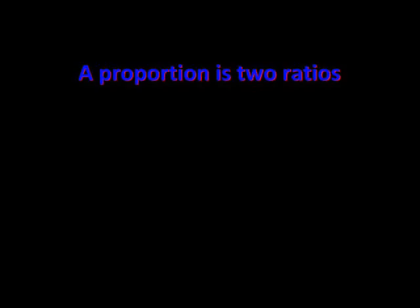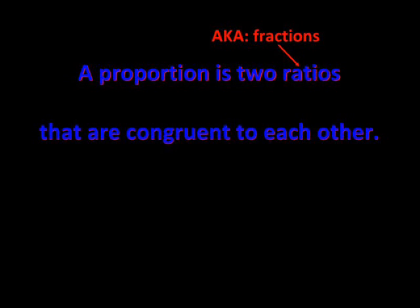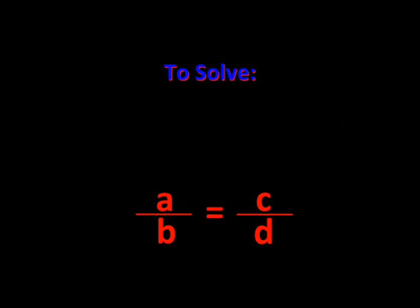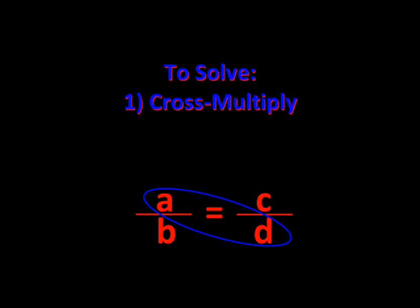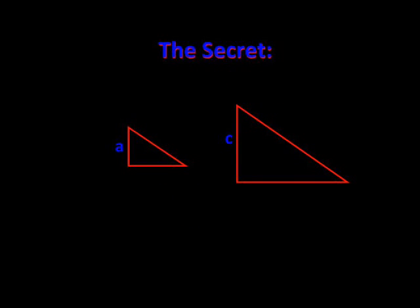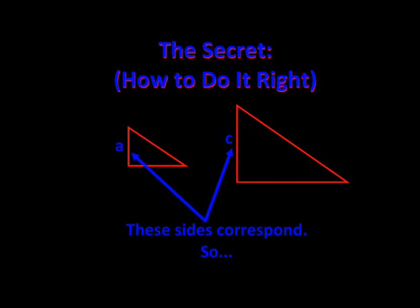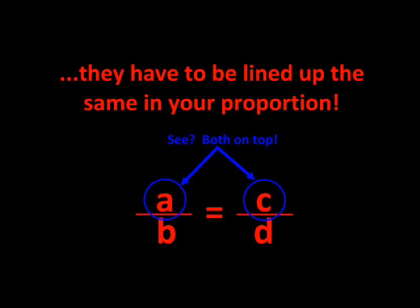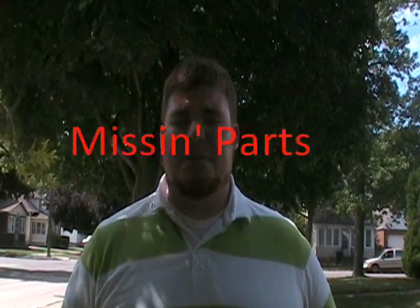A proportion is two ratios that are congruent to each other. To solve, you just cross multiply and divide. The secret to how to do it right: make sure corresponding parts align, and then it's easy to find the missing parts.